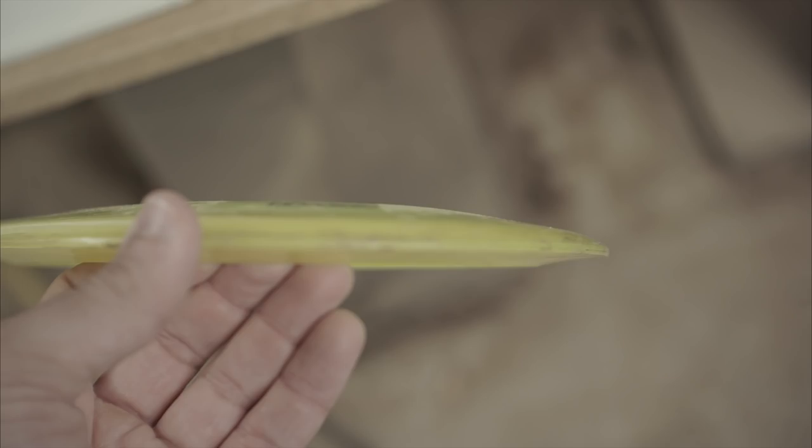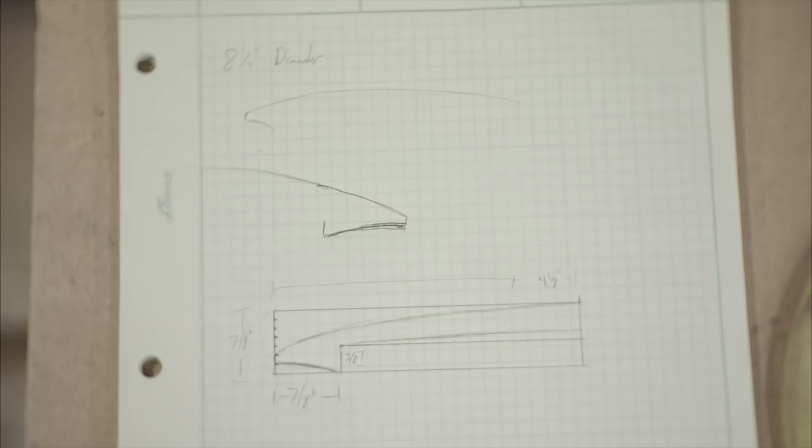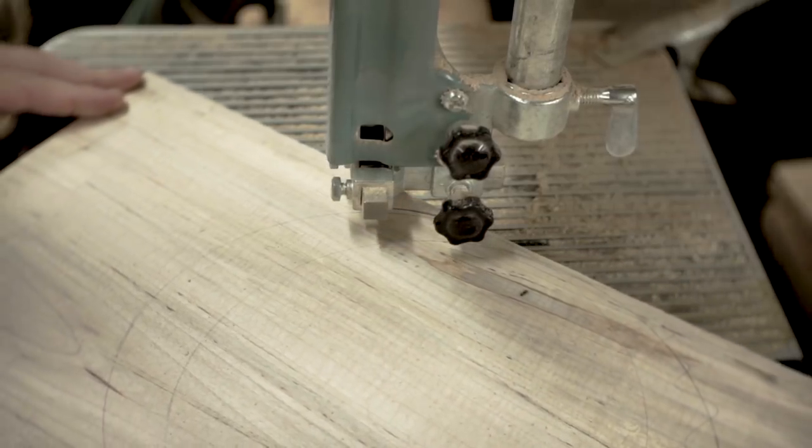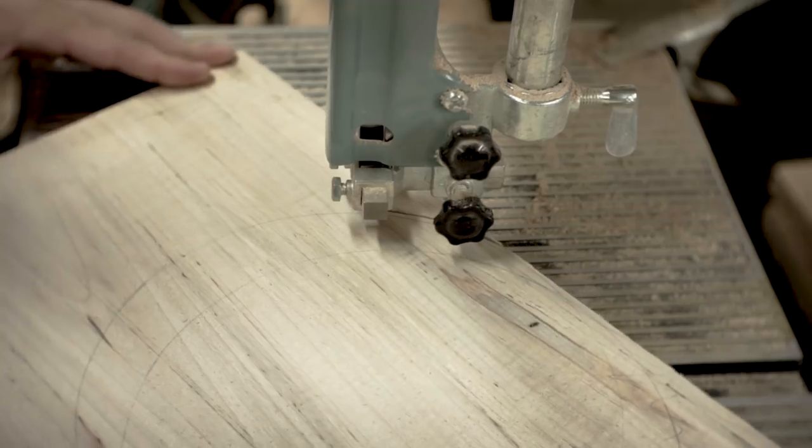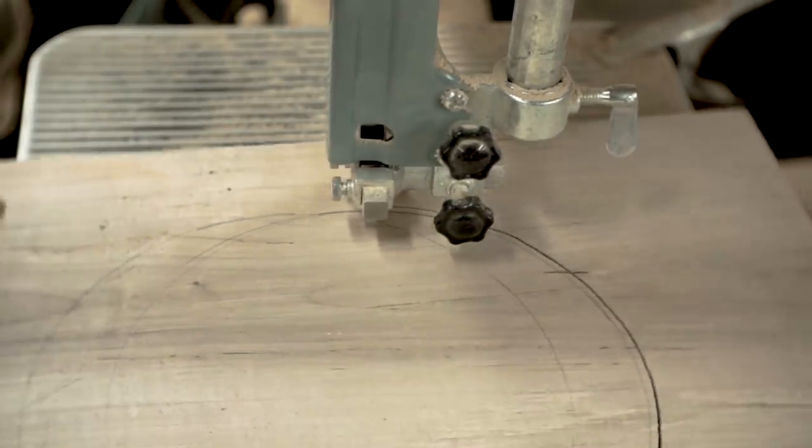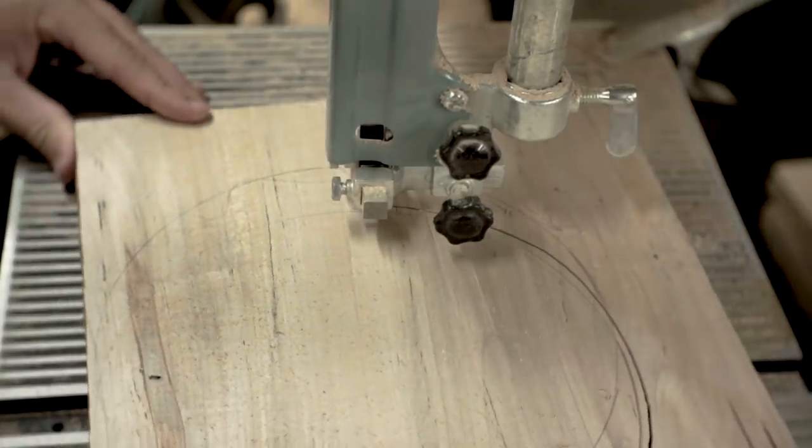I started by looking at a disc golf disc. I used a driver in this instance. And then I made some plans to give me some rough measurements to go off of before I stuck it on the lathe. And then I just went to the bandsaw after I traced out the disc and cut out some circles to use.